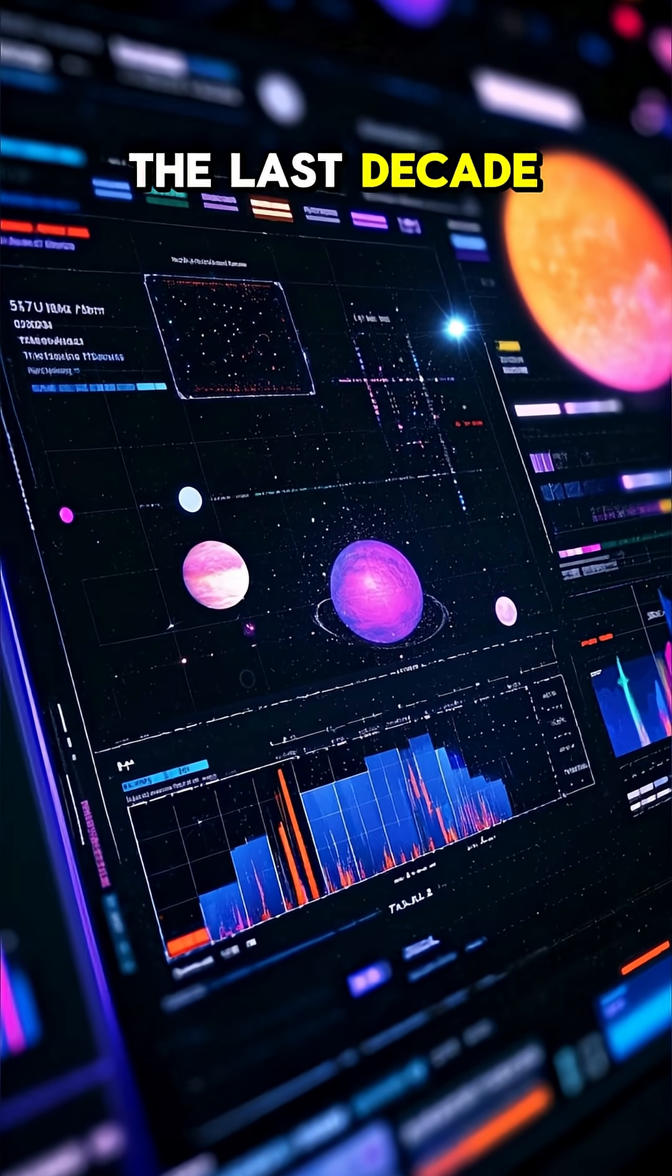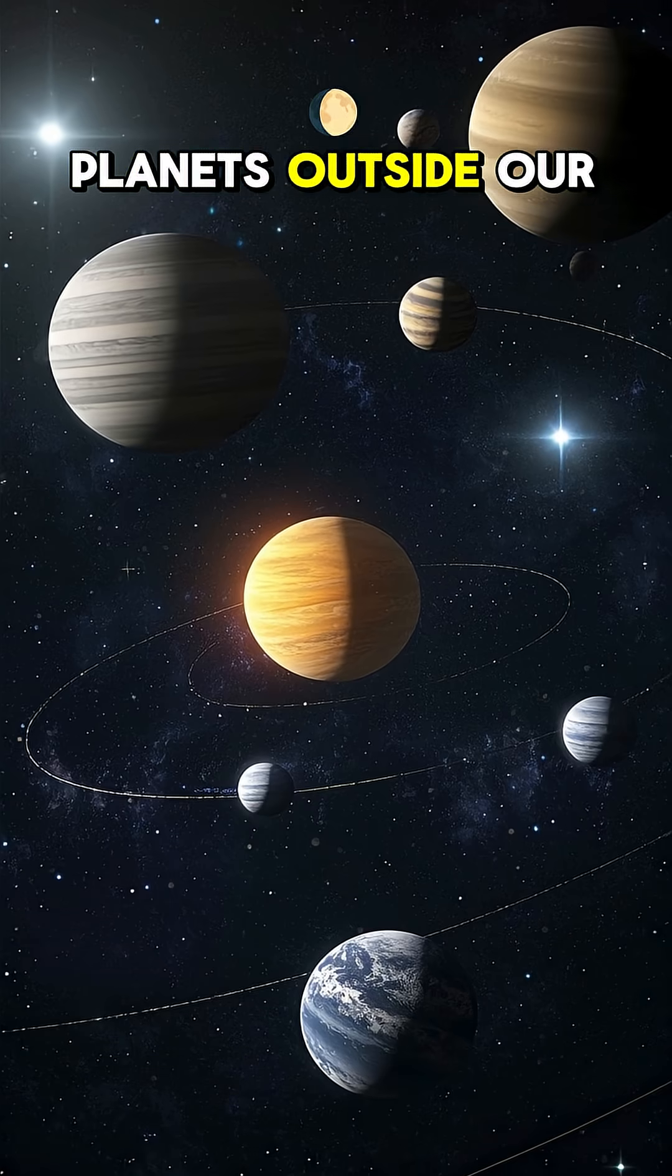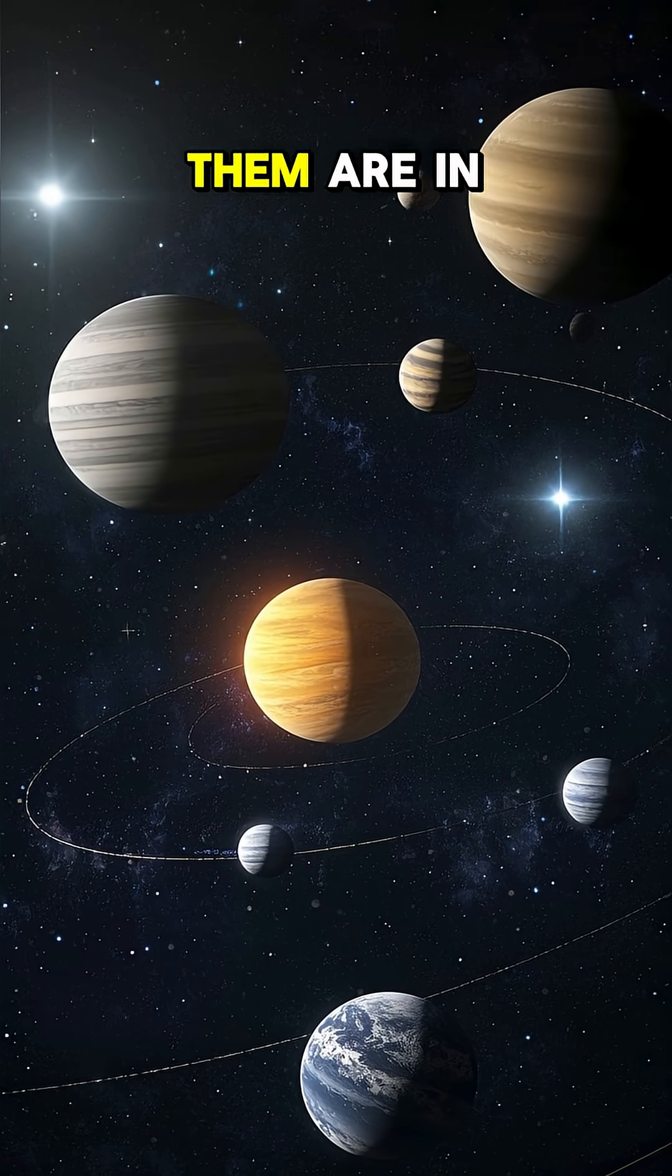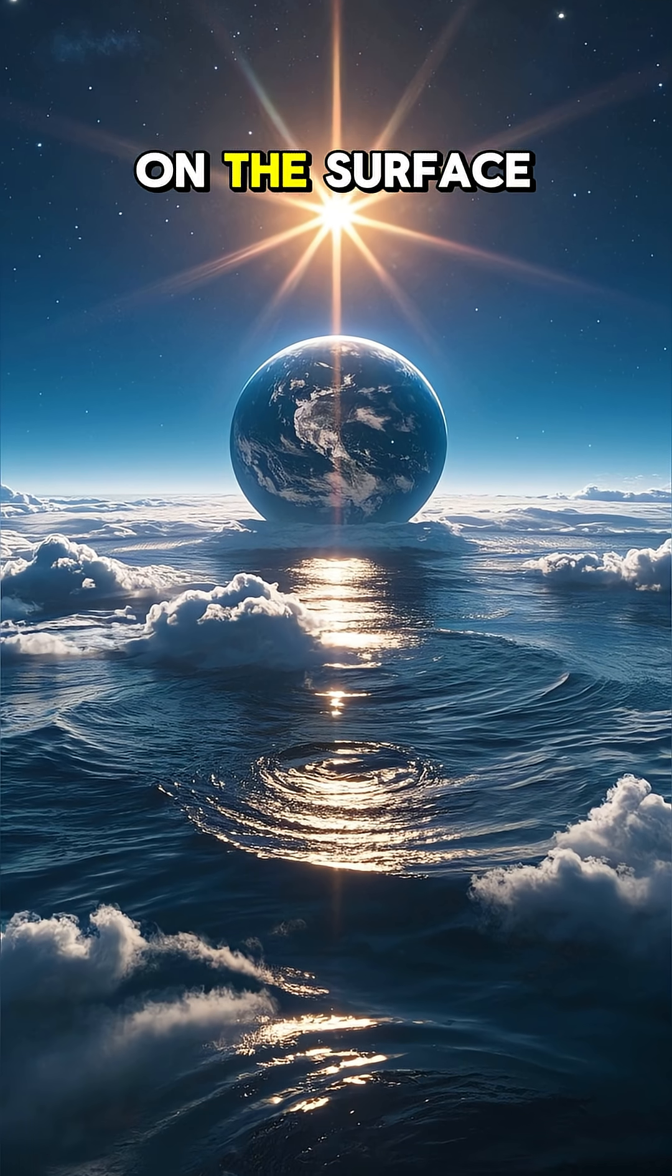That's because over the last decade we've found more than 5,000 exoplanets, planets outside our solar system that are roughly the same size as Earth. And some of them are in the habitable zone, meaning they could have liquid water on the surface.